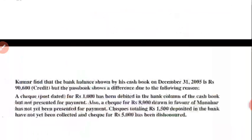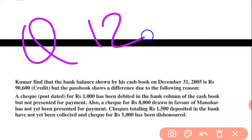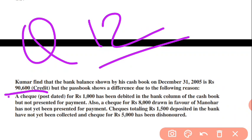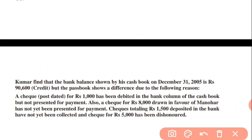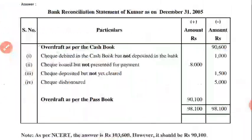Question number 12: Kumar finds the bank balance shown in his cashbook as 90,600. Yeh credit balance hai. A check of 1,000 debited in bank column of cashbook but not presented — plus ka ho gaya. Check of 8,000 drawn in favor of Manohar but not yet presented for payment — same, plus ka. Check totaling 1,500 deposited but not yet credited — minus ho jayega. Check of 15,000 has been dishonored — cashbook se shuruat kar rahe hain, to minus karna padega.